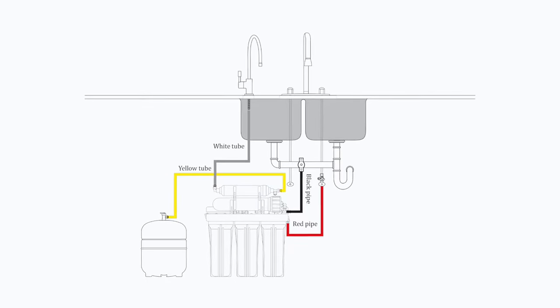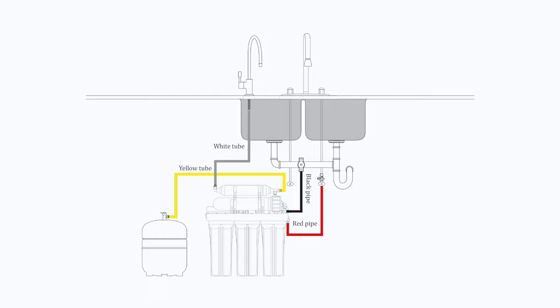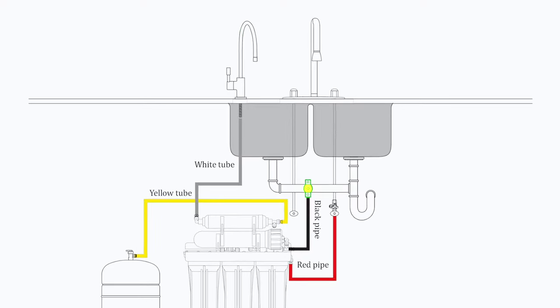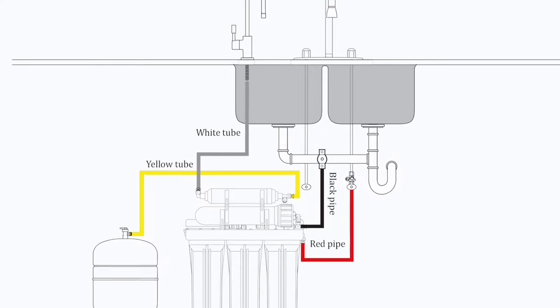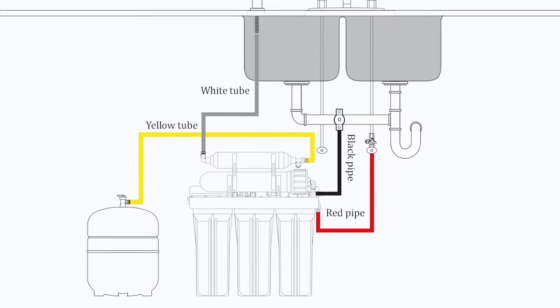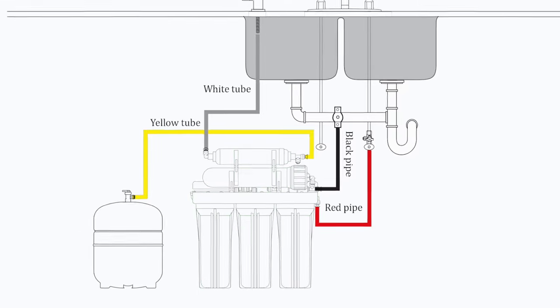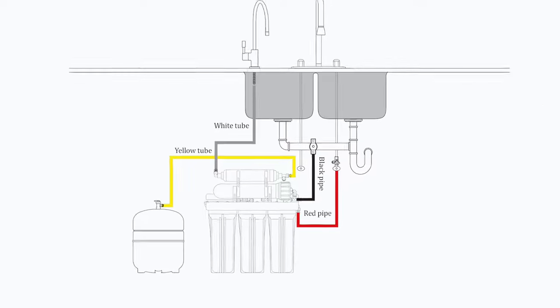First, we are going to talk about Quick Connect Plumbing Fitting. Then, we will help you prepare your RO Faucet, Wastewater Saddle Valve, Feed Water Adapter Valve, and Water Pressure Tank. After placing the RO Membrane and Filter Cartridges in their housing correctly, you are ready to connect the system.